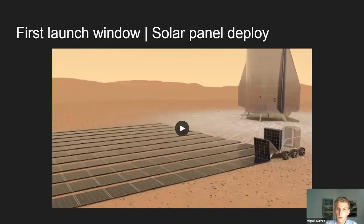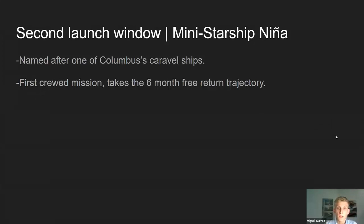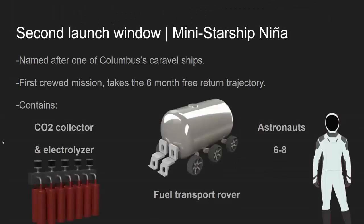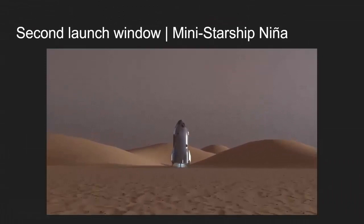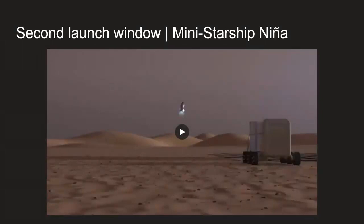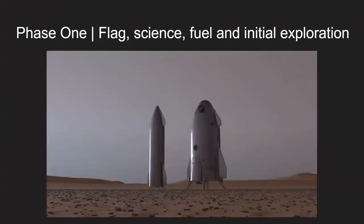The second launch window is two years later. Starship Nina — named after another of Columbus's ships — is the first crewed mission, taking the six-month free-return trajectory, not just for safety but for other reasons we'll see later. It contains a CO2 collector and electrolyzer to produce oxygen for the astronauts, a fuel transport rover, and six to eight astronauts. It lands some distance away from the other ships so as not to damage solar panels or other equipment.